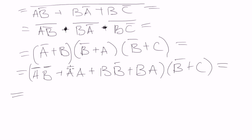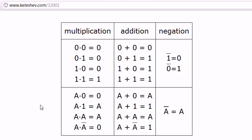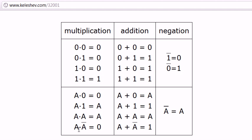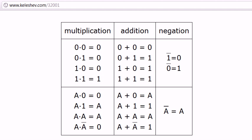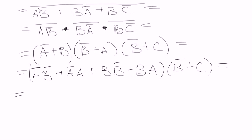We have A negated·A and B negated·B. And what could those be? If we have some variable multiplied by the same variable negated, it is zero - as in our first lecture. And also this guy will be zero, and this one will also be zero.